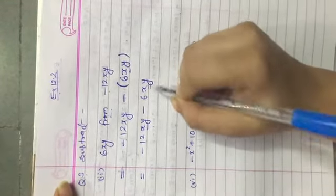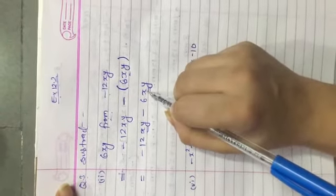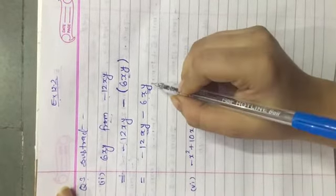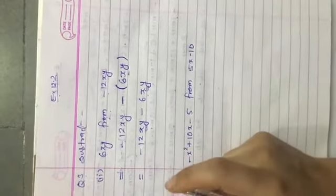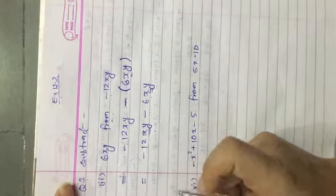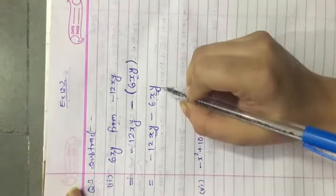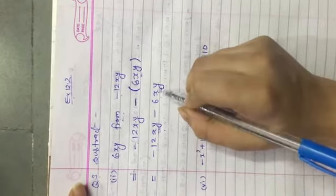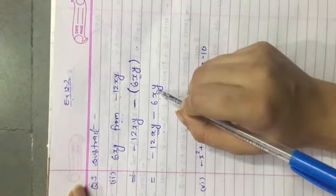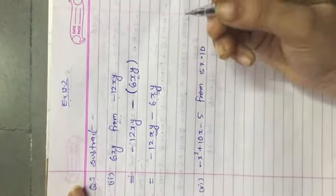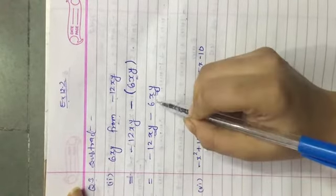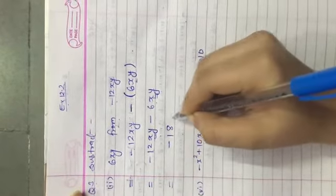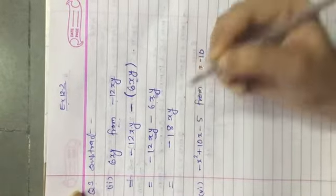Now see here, in the first term xy and in the second term also xy, it means these are like terms. Minus 12xy minus 6xy, these are like terms so we can solve easily. Both are negative terms, so definitely we will add the numbers and the sign will be negative. So minus 12 and minus 6 gives minus 18, and the xy variable as it is. So minus 18xy is the answer.